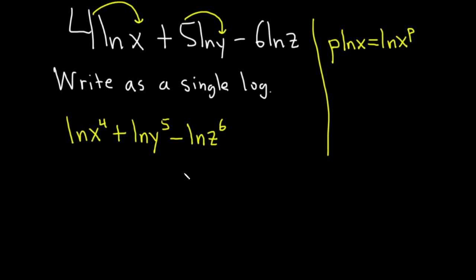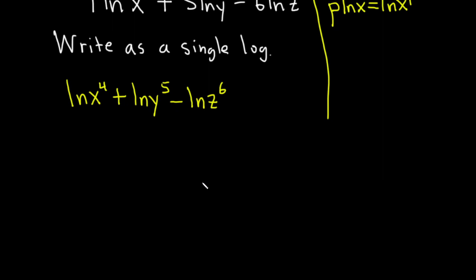Okay, so we've gotten rid of all the numbers, and there was a reason we did that first. Now there's two more rules that we're going to use. The first one is the product rule, which says if you have the natural log of a plus the natural log of b, that's equal to the natural log of a times b. There's a really cheesy way to memorize this: the addition turns into multiplication.